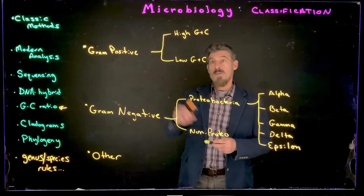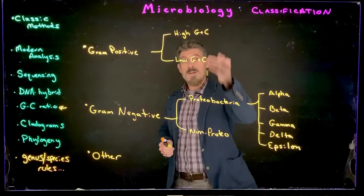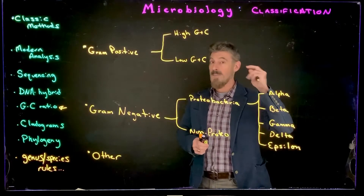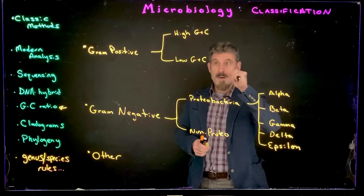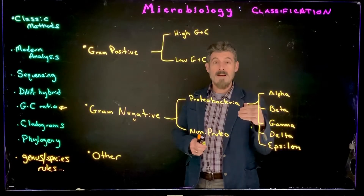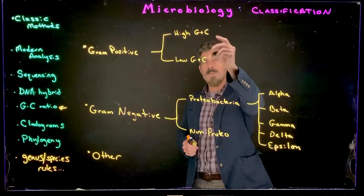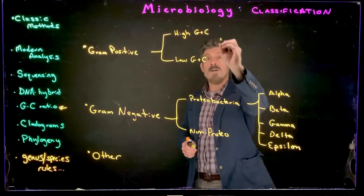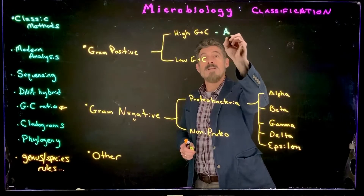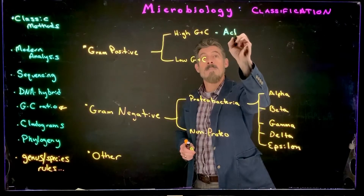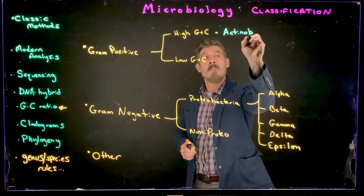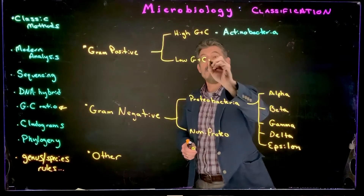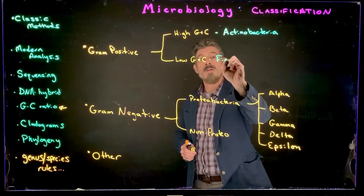For the gram-positive bacteria, they're broken down first not by cocci or bacilli, but by high and low GC content. That's over 50% for high and below 50% for low. The high GC group is called Actinobacteria, and the low GC group is called the Firmicutes.